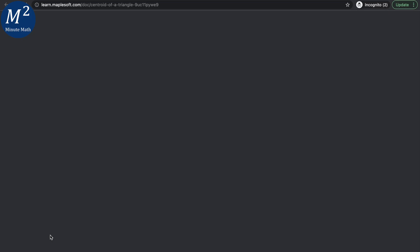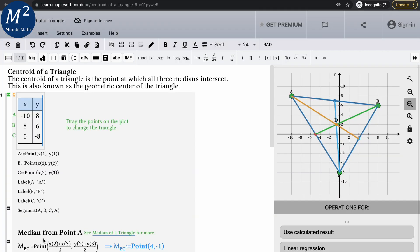Going down, boom, select the centroid of a triangle. Pre-made example that they have. And we see this lovely graph here. There's explanations on the left-hand side, more in-depth that they have on the centroid of the triangle. But I'm going to focus on the graph here.